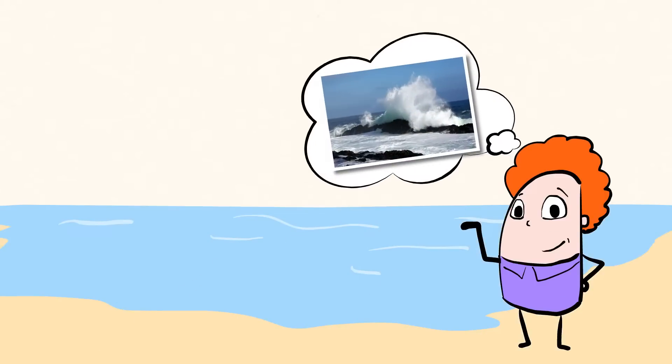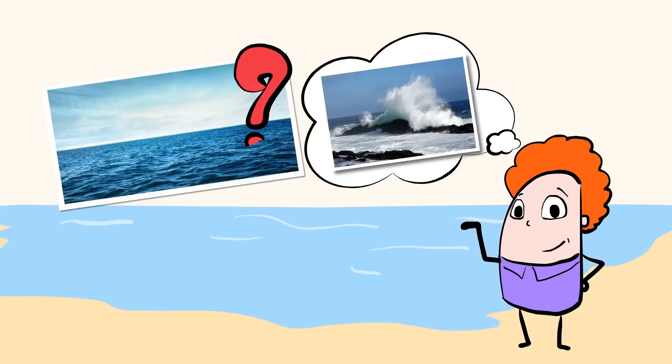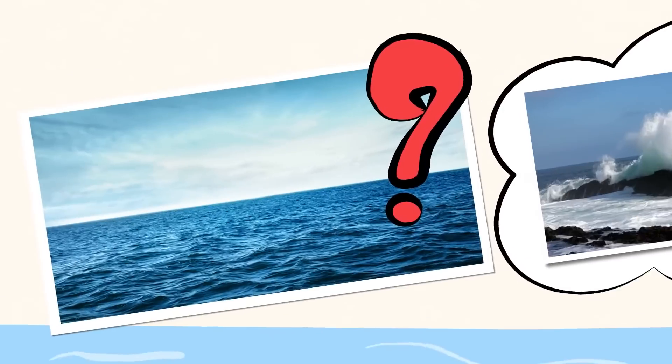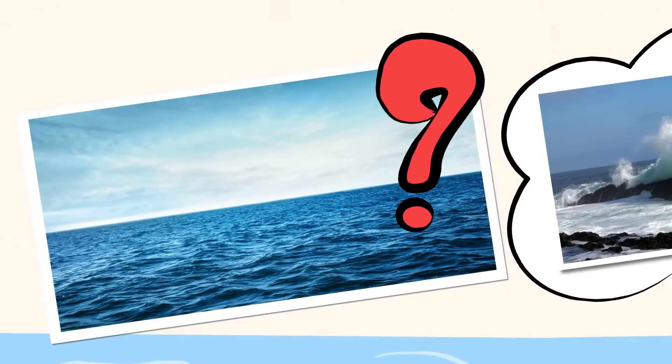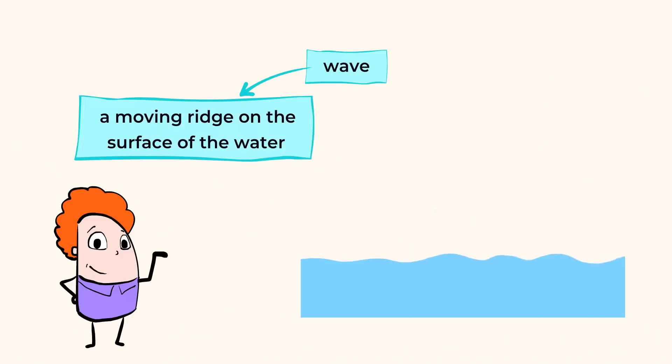When I think of the ocean, I think of waves crashing into the shore. But what about the waves out in the middle of the ocean? What shapes are they? Let's take a closer look. A wave is a moving ridge on the surface of water. But what exactly causes a wave?